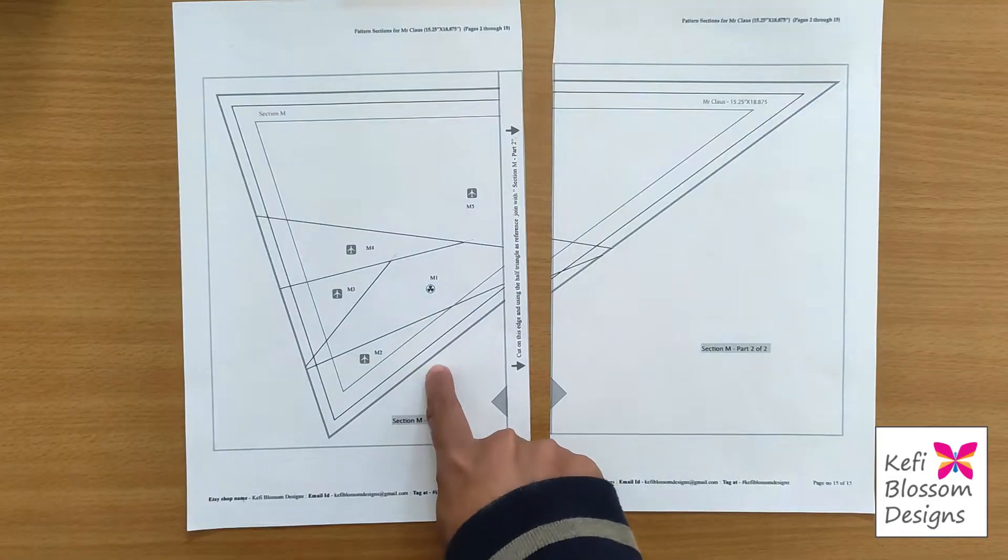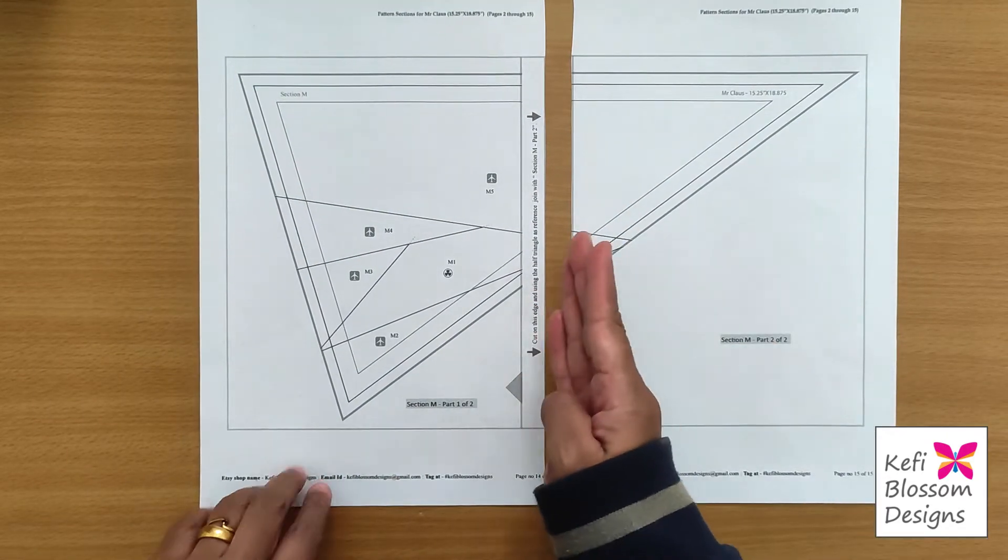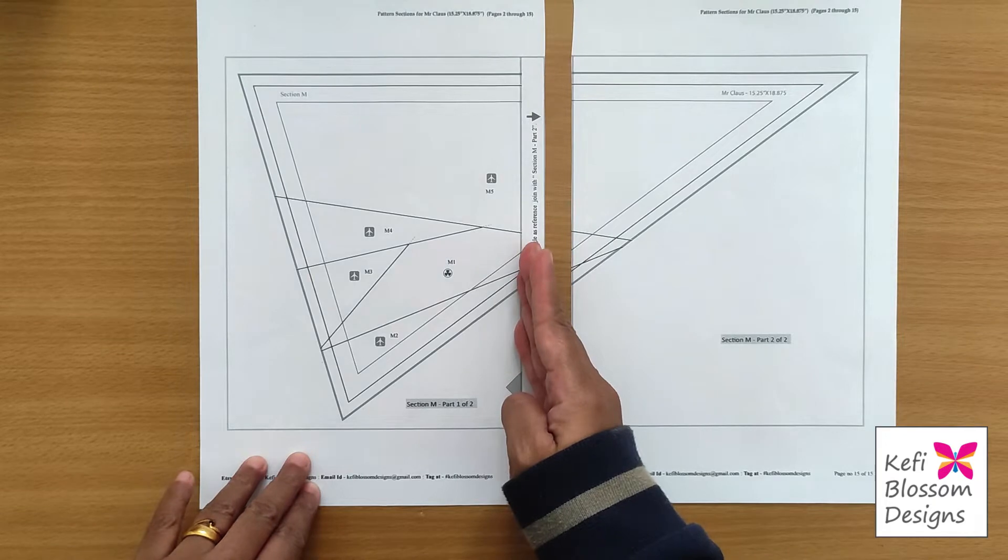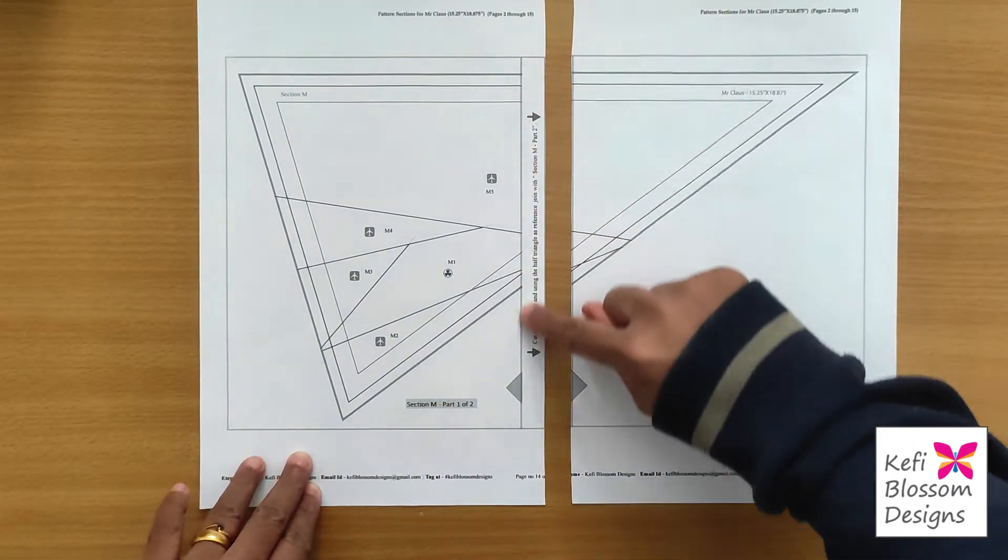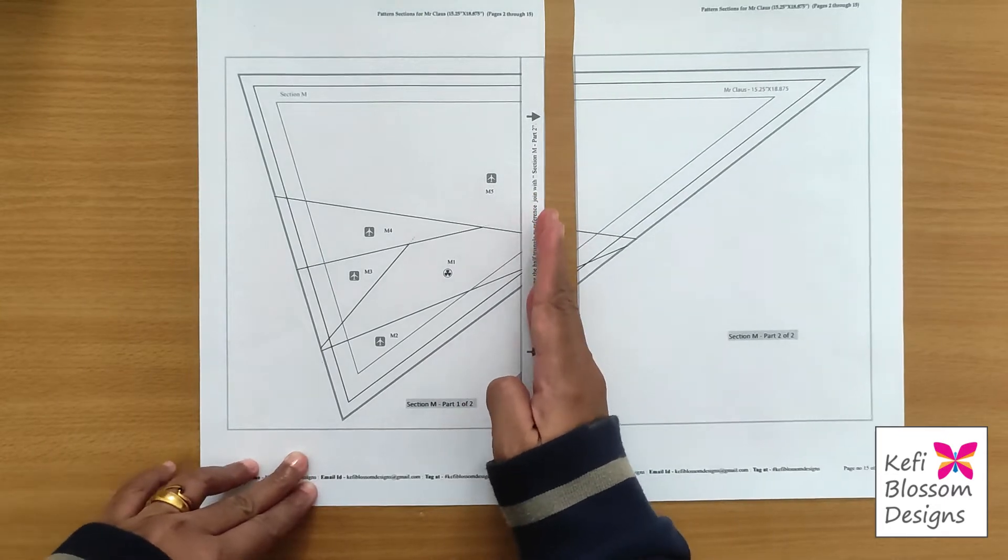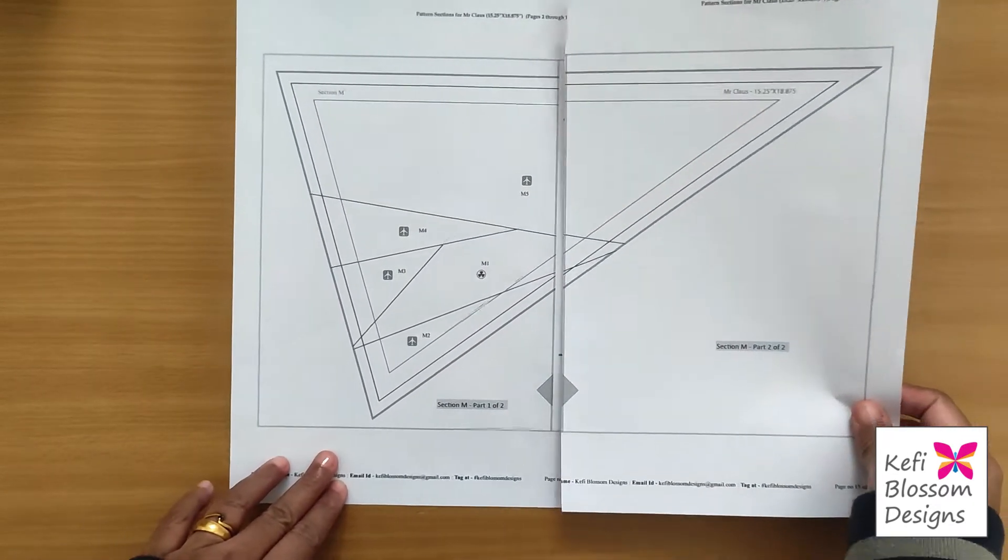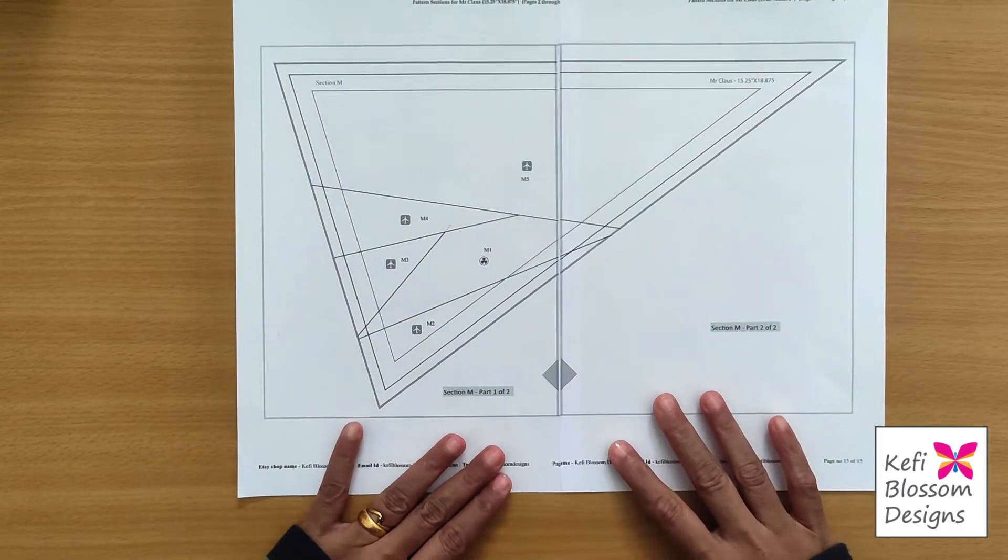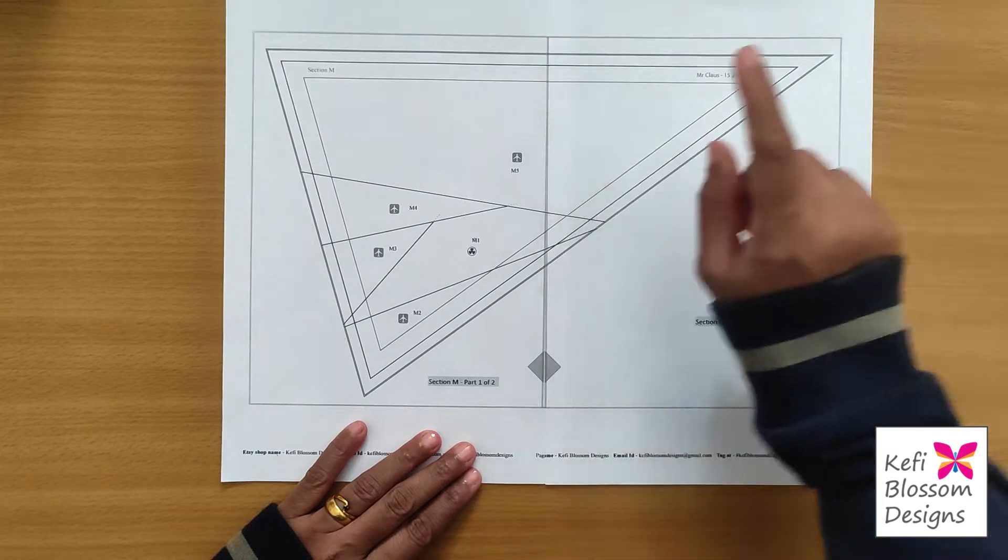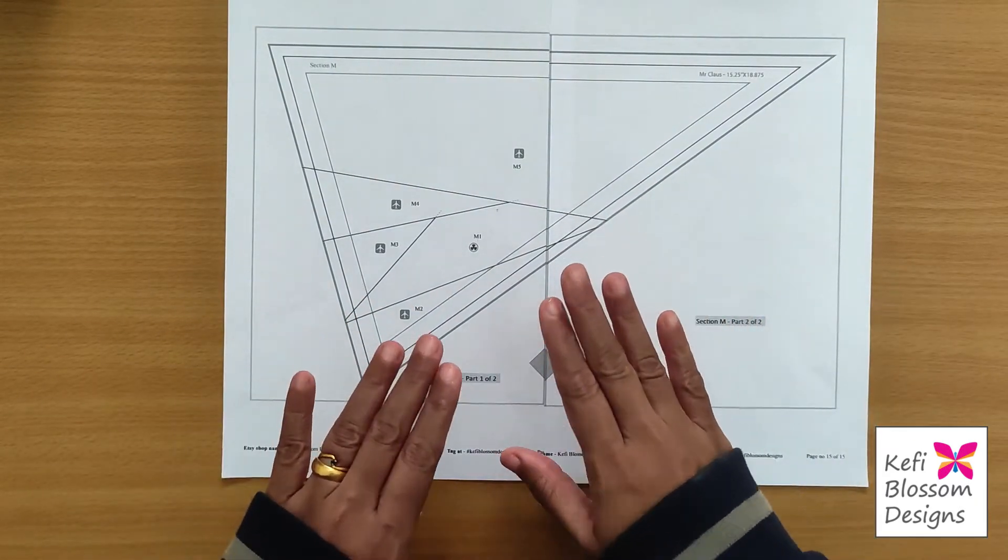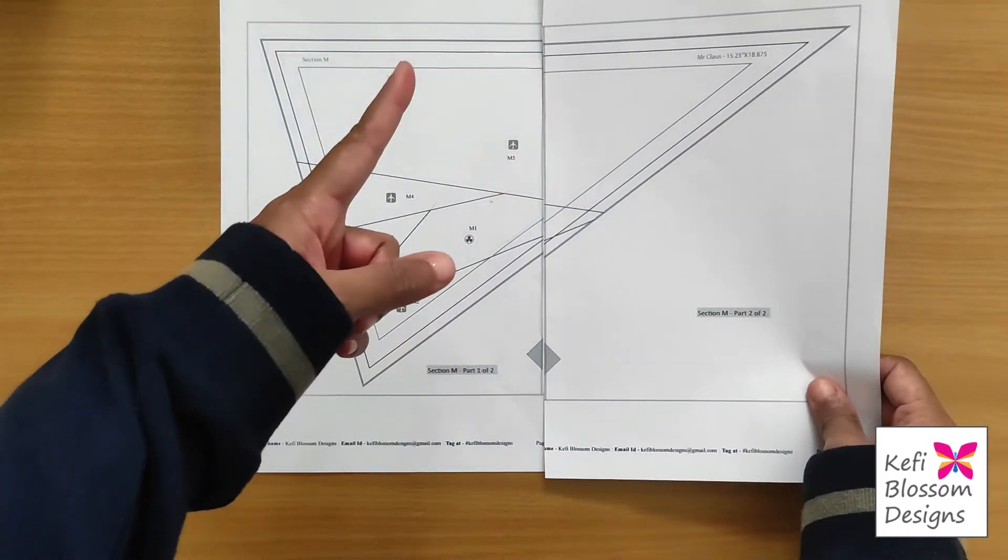So now this is part 1 and part 2. Now you'll notice wherever you've cut, one side will have some extra space. Like this part 1 has this where you see the instructions written, that is extra page. So we will place this part 2 over that extra space. Try to match these points and then put a cello tape and join these two pieces together.